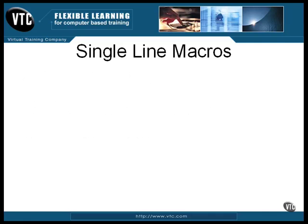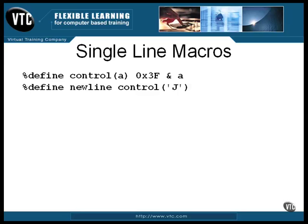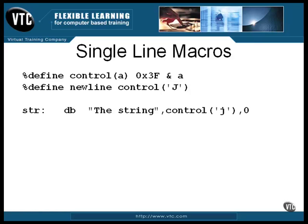There is another way you can do it. You can define this single-line macro with arguments. In this macro, the parameter A is replaced by whatever argument you put in the parentheses. So defining the newline character or any control character becomes a matter of placing the quoted character inside the parentheses. You can use it this way to define the newline character or include it right inline. The construction of any control character becomes easy. By the way, the character can be uppercase or lowercase — same result.